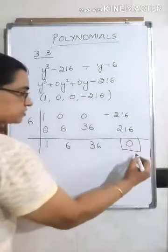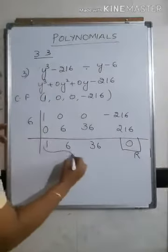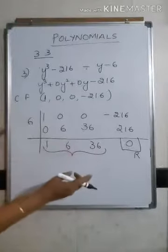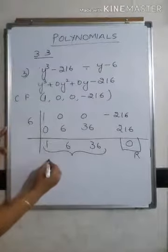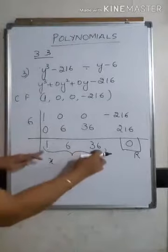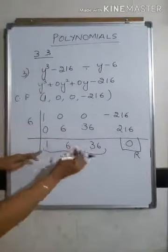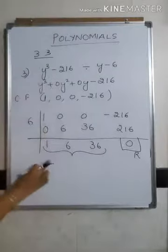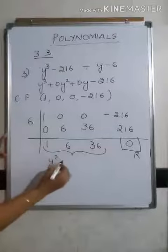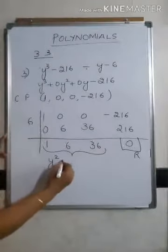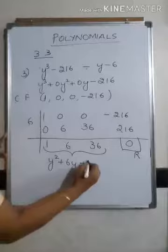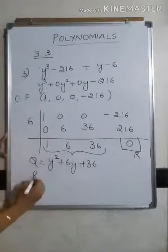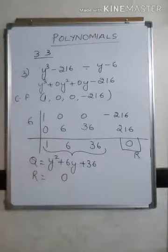The last term is the remainder, which is 0. The quotient is in coefficient form: 1, 6, 36. Since there are three numbers, start with y squared. The quotient is y² plus 6y plus 36, and the remainder is 0. This completes the synthetic division of y³ minus 216 divided by y minus 6.